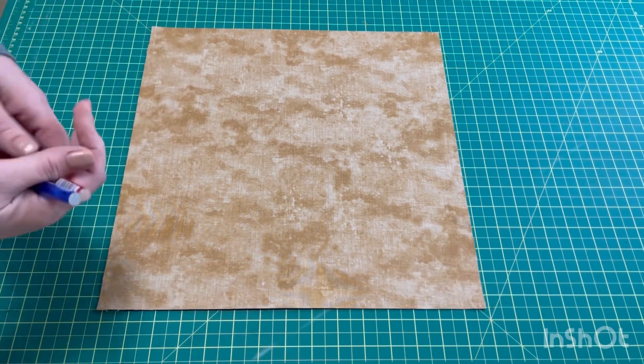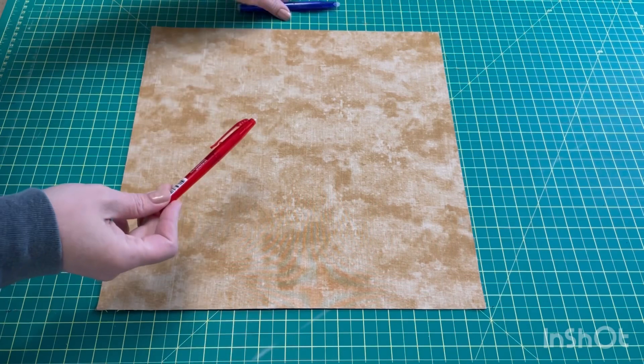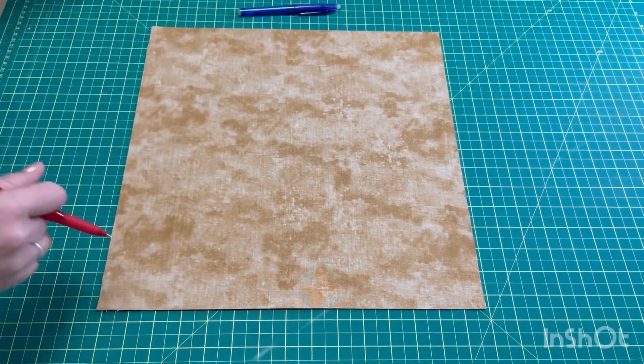I have two pieces of fabric here, they are right sides together, and I have two different colored heat erase pens to mark my lines. I will be using the red one to mark my cut lines because I don't want to sew down those lines.